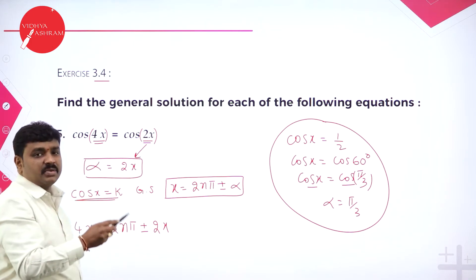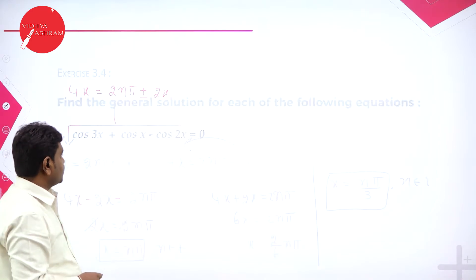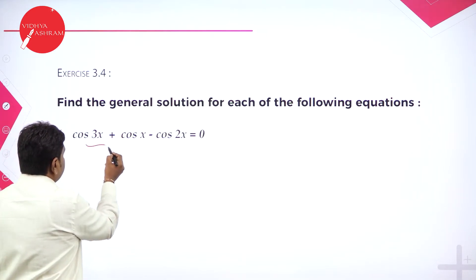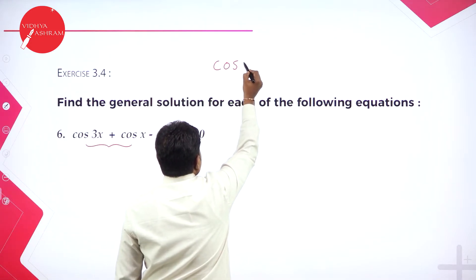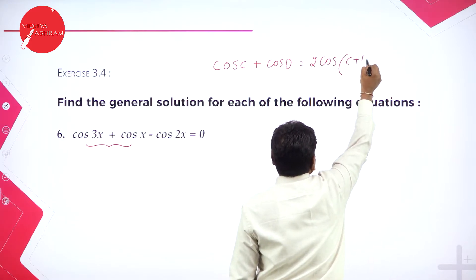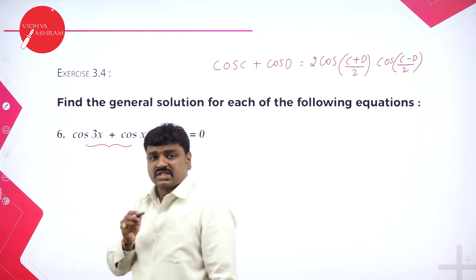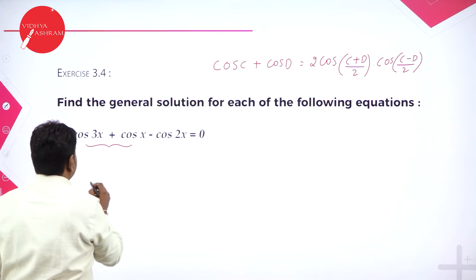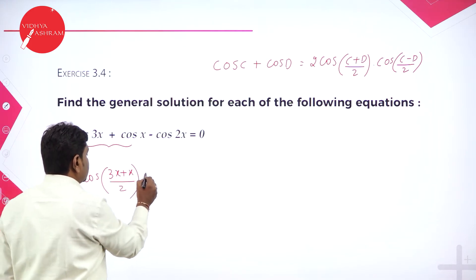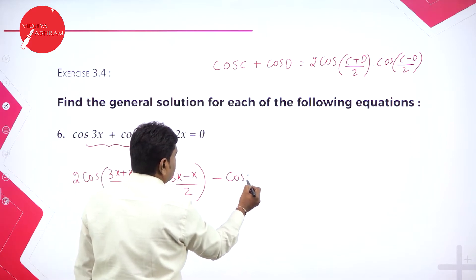The next problem: cos 3x plus cos x minus cos 2x equals 0. There are 3 terms. The first two terms are in the form cos c plus cos d. The formula is cos c plus cos d equals 2 cos((c+d)/2) into cos((c-d)/2). So cos 3x plus cos x can be written as 2 cos((3x+x)/2) into cos((3x-x)/2), minus the third term cos 2x, equals 0.